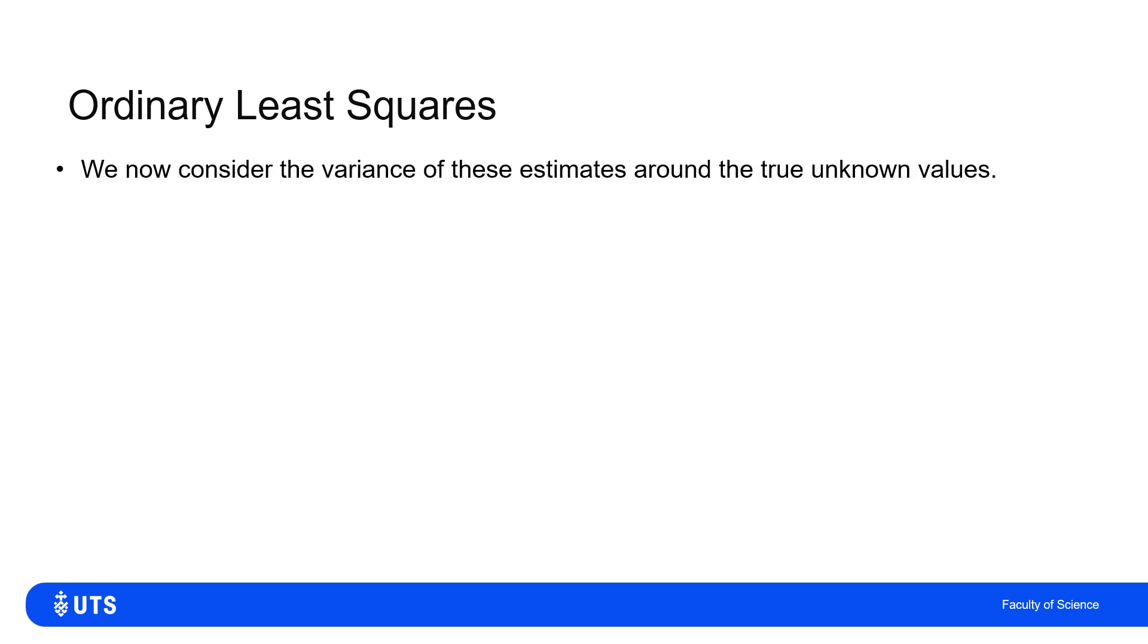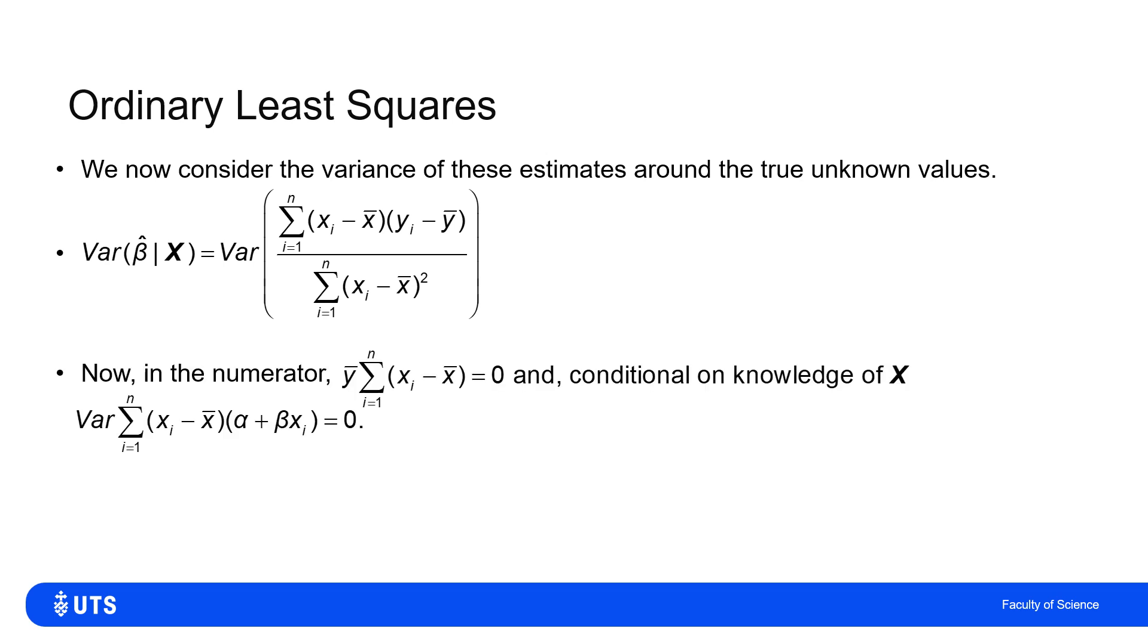What about the variance of these estimates around the true values? Well, this is a bit messier, but the variance of β̂ for a given sample x, it's just the variance of, well, however I'd calculate it. So what I can do is I can then say in the numerator I've got a ȳ times the sum of the (xi - x̄)s and that's got to be zero, because conditional on knowledge of my sample x, the variance of that should be zero.